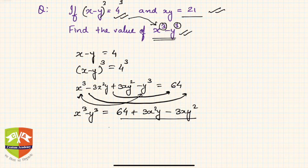Now if you see closely, this is nothing but 64 and there are few terms common. I can take 3xy common and it becomes x minus y. So what will it become? It is nothing but 64 plus 3 times xy times x minus y.